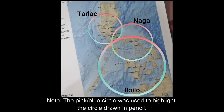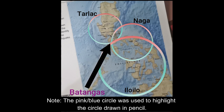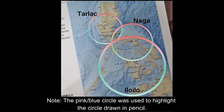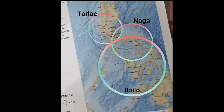Now you can see that we have three circles and they intersect at one place. In this example, that place is Batangas. Therefore, the point of intersection is the epicenter of the earthquake. That's all for this demonstration — thank you for watching.